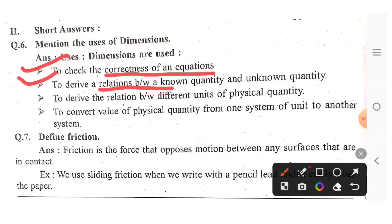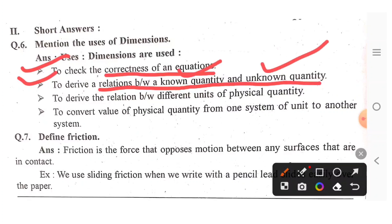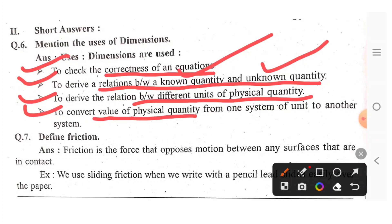The third question: to derive the relation between the known quantity and the unknown quantity, and to derive the relation between units and physical quantities. It is also used to convert the value of a physical quantity from one system of units to another system.